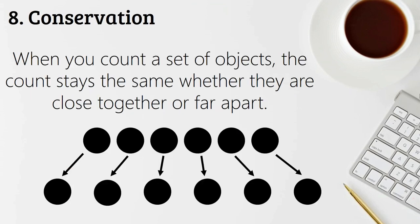The next counting principle is conservation. So this means that when you're counting a set of objects, the count stays the same, whether they are close together or far apart. So if I count six dots, and then I spread them out, it's still six dots there, they're just further apart from each other. And I know that Diane also had a great way to show this to her students when she had carpet time with them. And I thought this was a great way for them to see conservation in action.